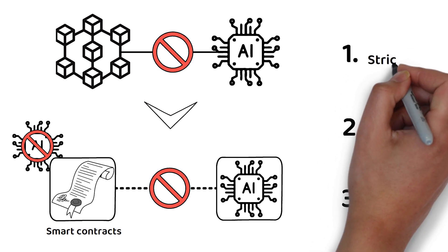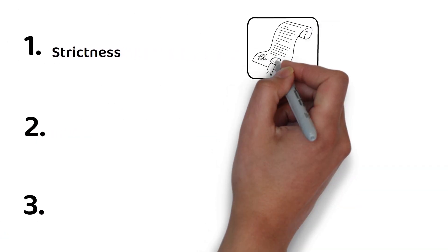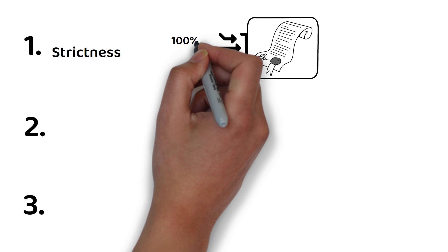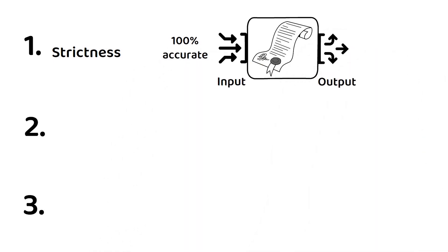First, strictness. Simply put, smart contract inputs must be 100% accurate to generate the correct output. However, as AI models cannot be trusted with such high levels of accuracy, this has been a limitation for AI on the blockchain.